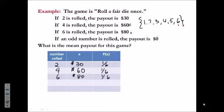Finally, if an odd number is rolled, the payout is nothing, $0. And the probability of rolling an odd number, odds would be 1, 3, or 5. That's 3 out of 6. What we have just constructed is a probability distribution table for the random variable x.